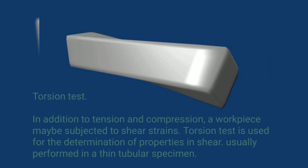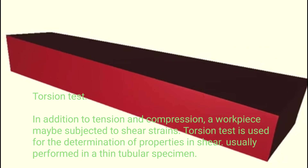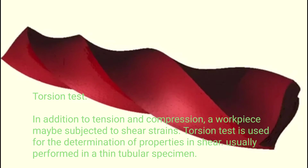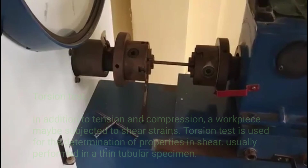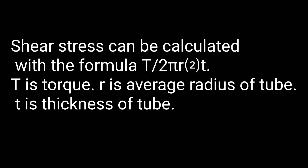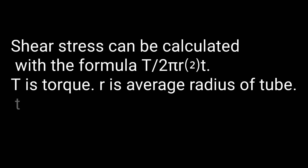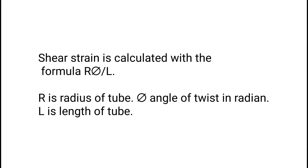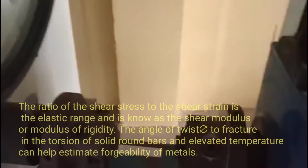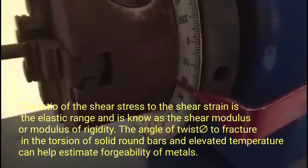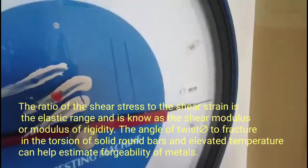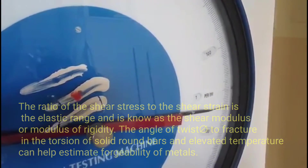Torsion Test. In addition to tension and compression, a workpiece may be subjected to shear strains. Torsion test is used for determination of properties in shear, and is usually performed on a thin tubular specimen. Shear stress is calculated with the formula: torque divided by 2 times pi times radius squared times thickness of tube. Shear strain is calculated as: radius of tube times angle of twist in radians, divided by length of tube. The ratio of shear stress to shear strain in the elastic range is known as the shear modulus or modulus of rigidity. The angle of twist to fracture in the torsion of solid round bars at elevated temperature can help estimate the forgeability of metals.